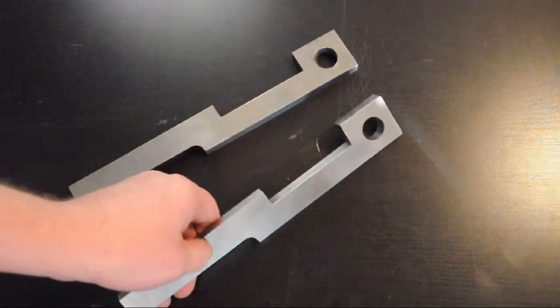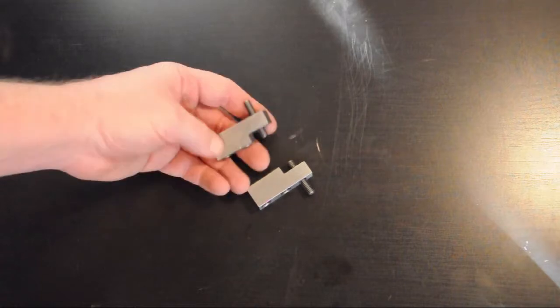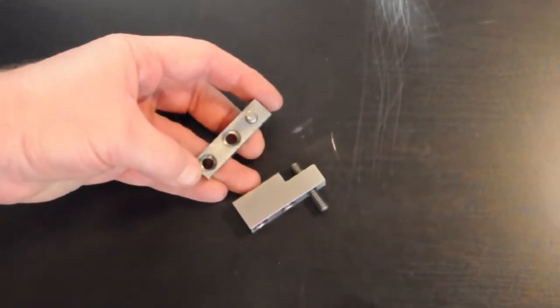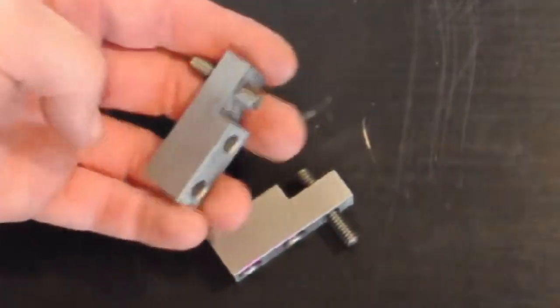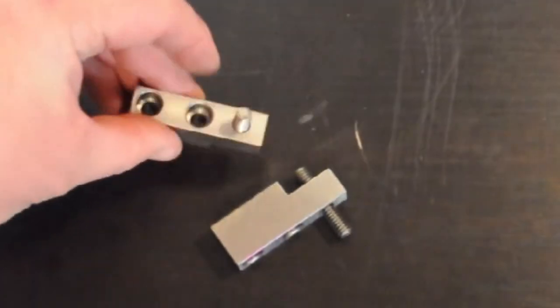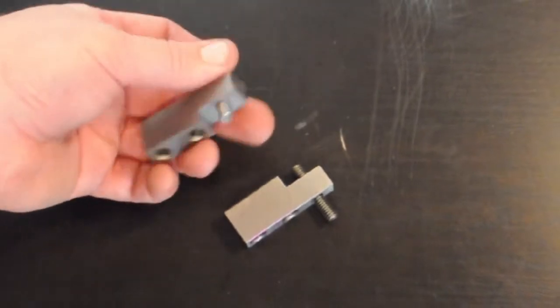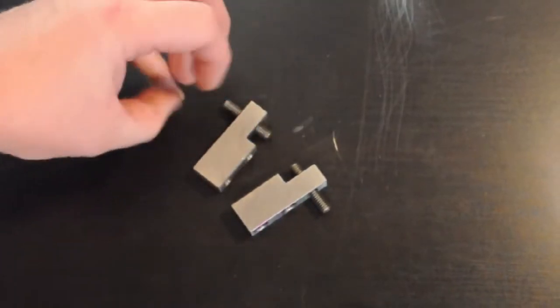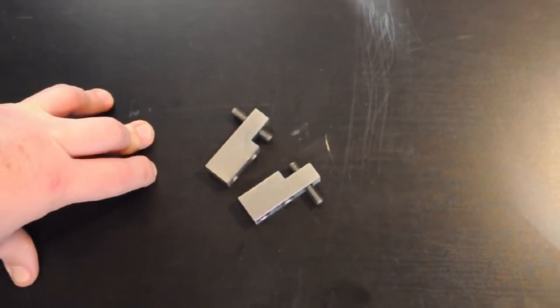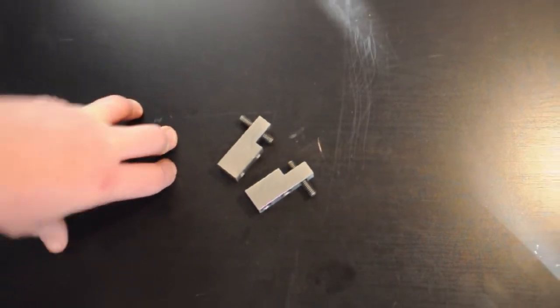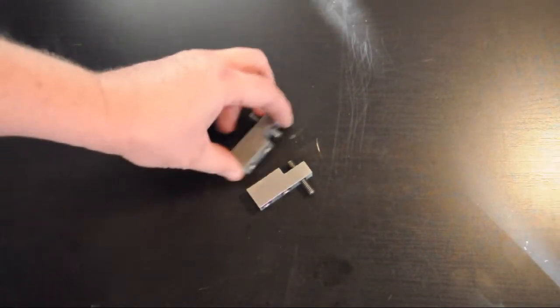Two smaller components are the tensioner fore and aft adjustments for the upper plate. These are simple, just half inch cold rolled, a couple counter bored holes, tapped hole. I'll be making some knobs that are knurled, probably out of aluminum or brass to make everything match.